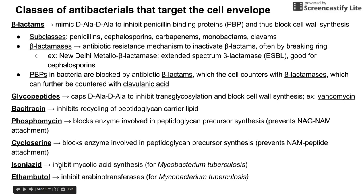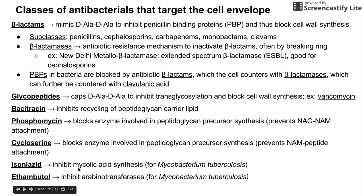Ethambutol is also specific to TB. It inhibits arabinotransferases, which is one of the layers underneath the mycolic acid cellular envelope layer in TB.